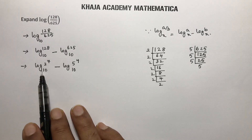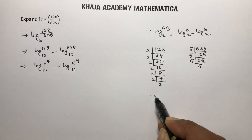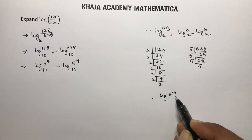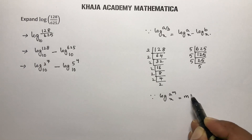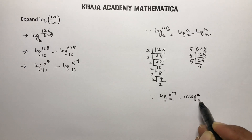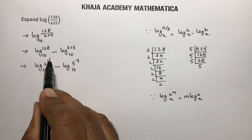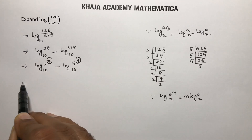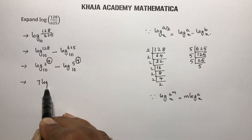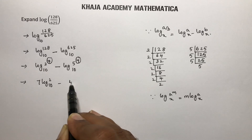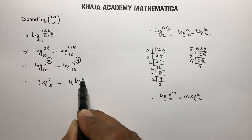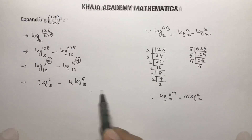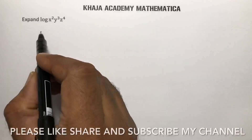These two terms are in the form of logarithm of a power: log(a^m) to the base x equals m·log a to the base x. Here the powers are 7 and 4, so the answer is 7·log 2 to the base 10 minus 4·log 5 to the base 10.